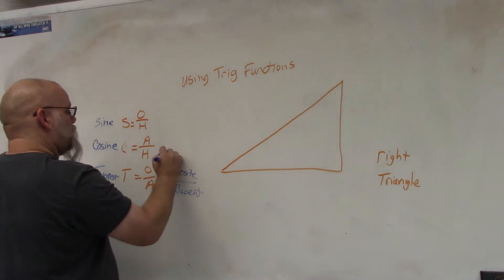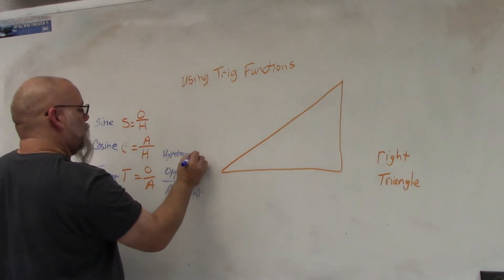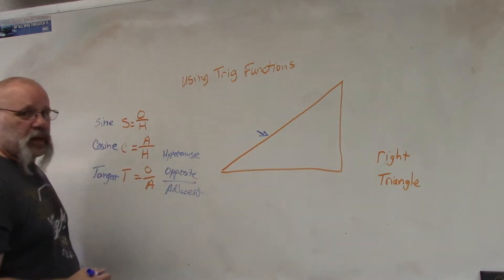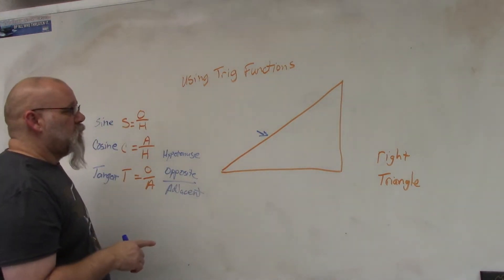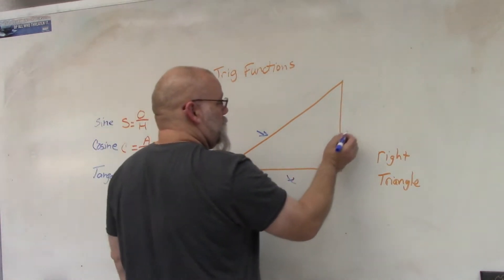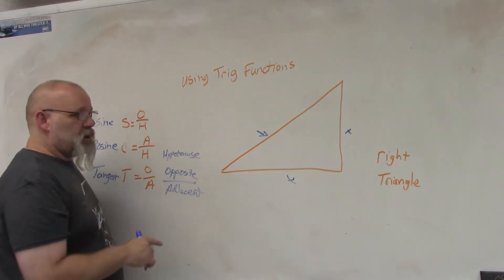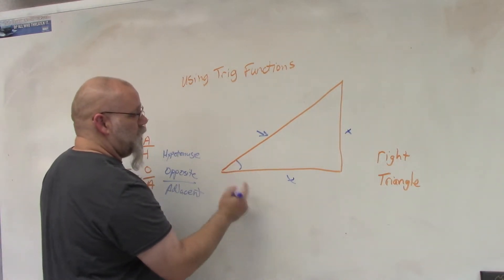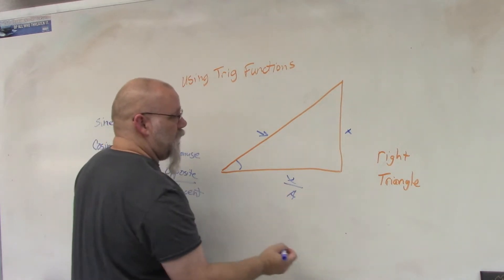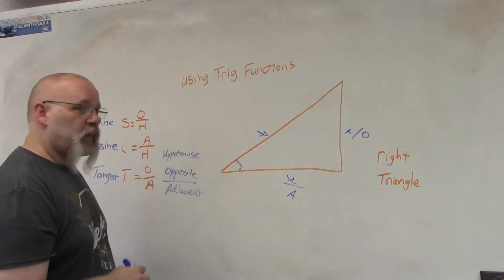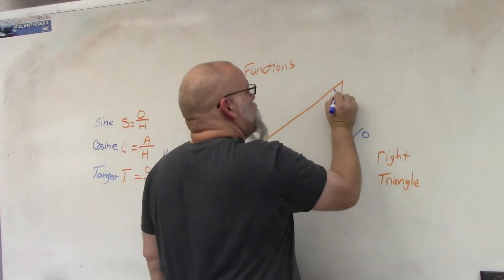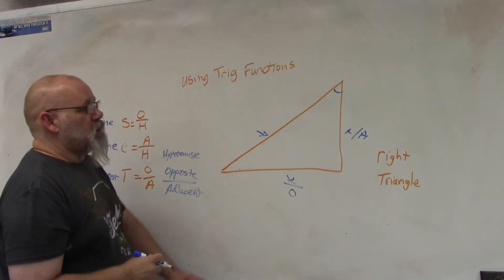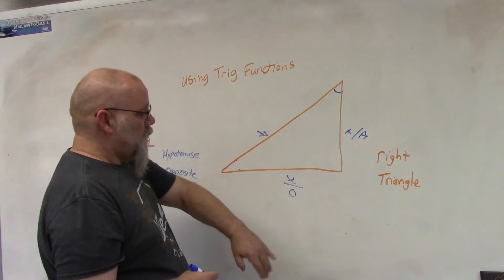And H stands for hypotenuse. The hypotenuse is always the long side of the right triangle — that is always the hypotenuse. The other two sides can either be the opposite side or the adjacent side depending on which angle you're working with. If I'm working with this angle, then this is the adjacent side and this is the opposite side. If I'm working with this other angle, this side becomes the adjacent side and the other side becomes the opposite.